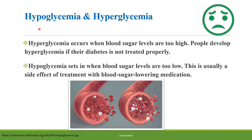The first topic is hypoglycemia and hyperglycemia. Hypoglycemia occurs when blood sugar levels are too high. People develop hyperglycemia if their diabetes is not treated properly. Hypoglycemia sets in when blood sugar levels are too low, and this is usually a side effect of treatment with blood sugar lowering medications.